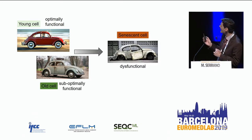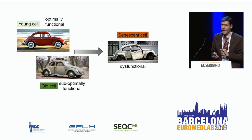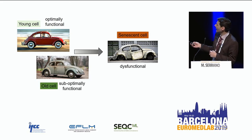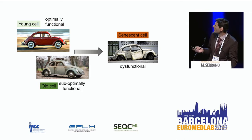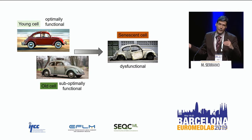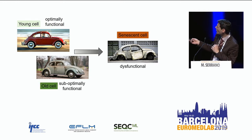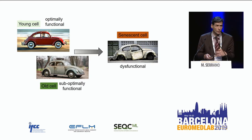And now the senescent cells. Senescent cells are dysfunctional cells — cells that are severely damaged and cannot work at all. That is the difference between an old cell and a senescent cell. Young cells have a higher threshold of damage to activate senescence than old cells. Old cells are closer to this threshold, but they can still work and function normally.